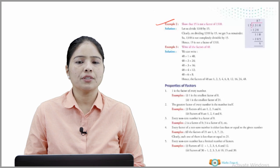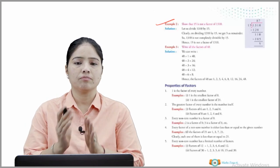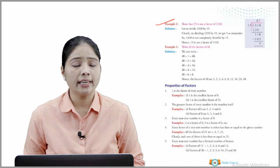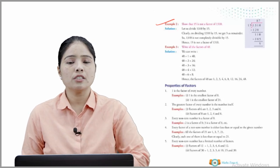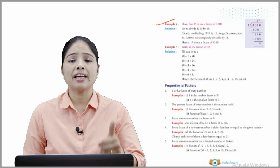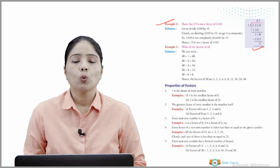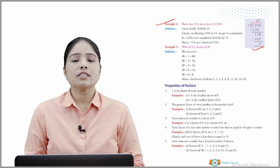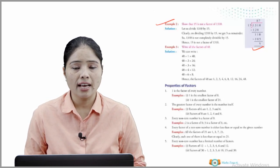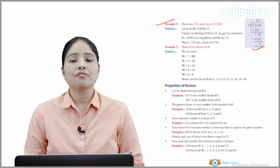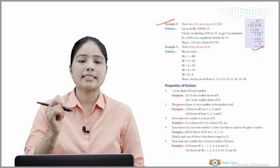Example 2: Show that 15 is not a factor of 1310. Solution: Let's divide 1310 by 15. On dividing 1310 by 15, we get 5 as remainder. Since 1310 is not completely divisible by 15, hence 15 is not a factor of 1310.